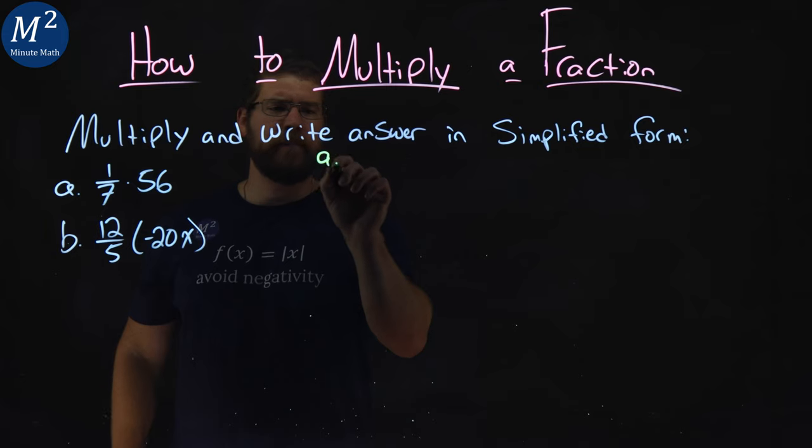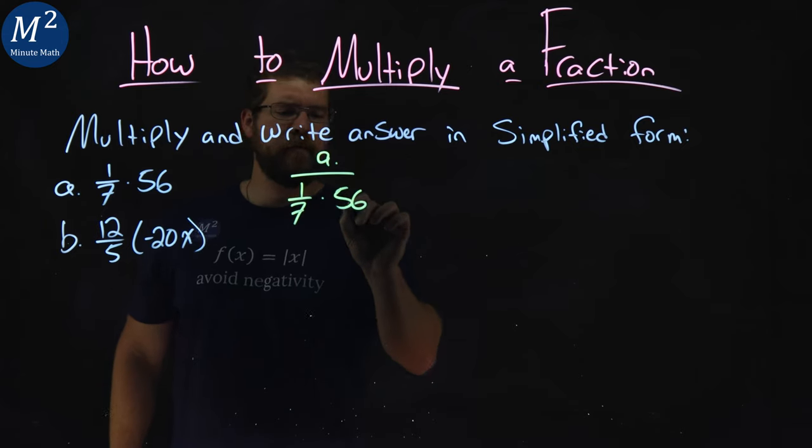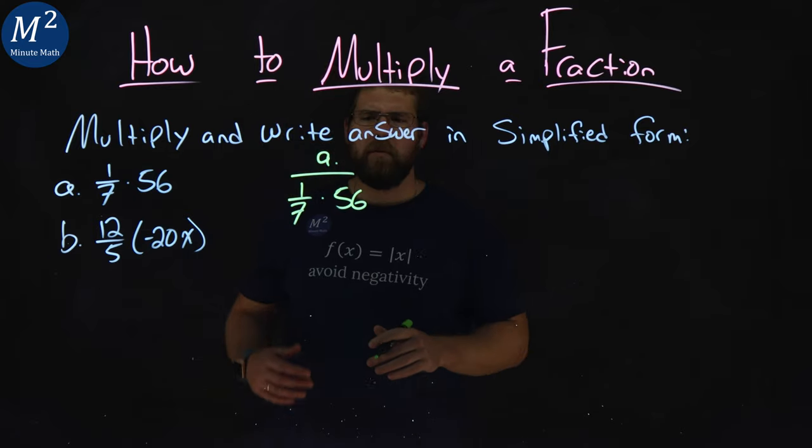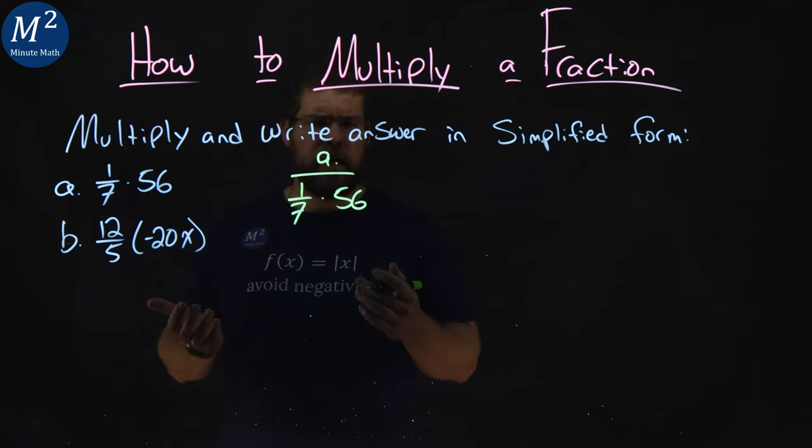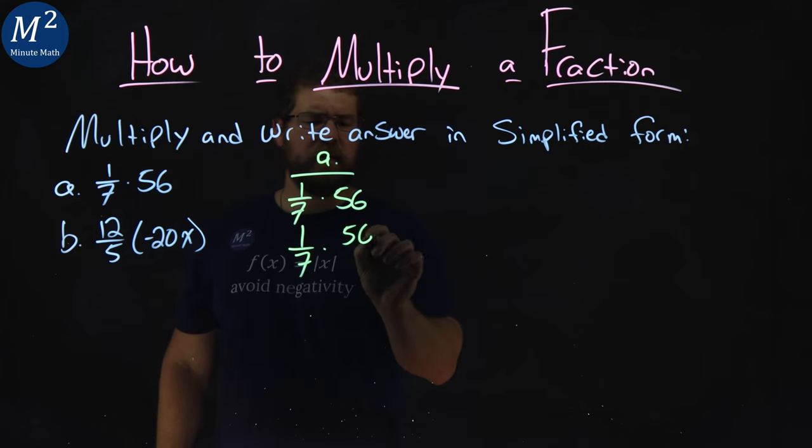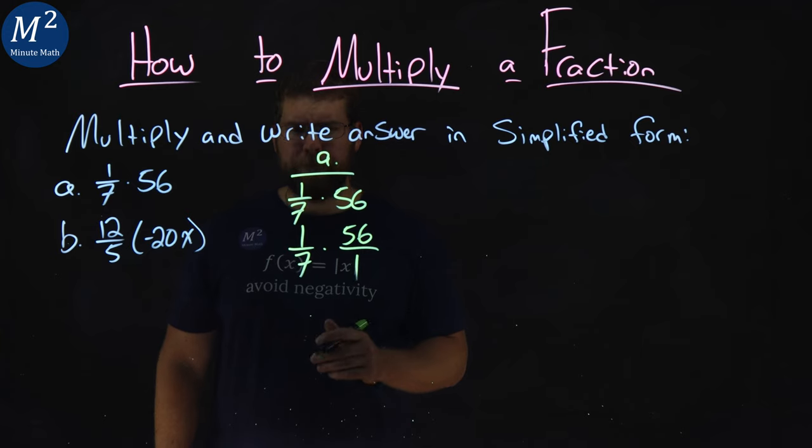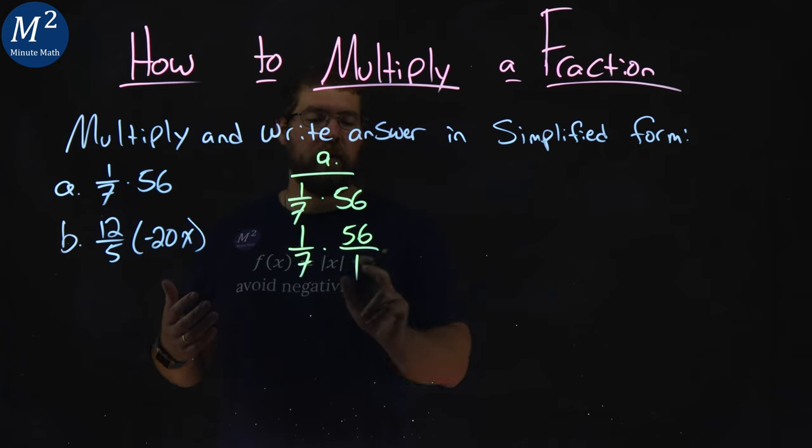Let's start with part A: 1/7 times 56. Well, 56 is really a fraction, or we can write it as a fraction. If we rewrite this as 1/7 times 56/1, now our rules still apply. Multiply across the numerator and across the denominator.